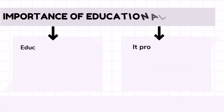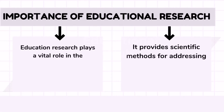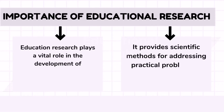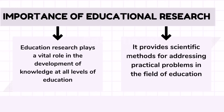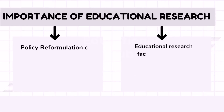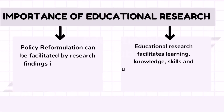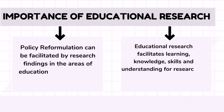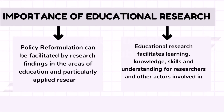Importance of educational research. First, education research plays a vital role in the development of knowledge at all levels of education. Second, it provides scientific methods for addressing practical problems in the field of education. Third, policy reformulation can be facilitated by research findings in the areas of education, and particularly applied research. Fourth, educational research facilitates learning, knowledge, skills and understanding for researchers and other actors involved in this research approach.